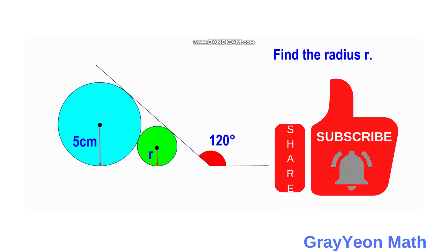We have two circles that are tangent to each other, and these two circles are both tangent to two lines. These two lines intersect at a point, and the exterior angle is 120 degrees. We are to find the radius of the green circle.